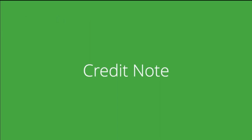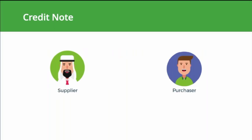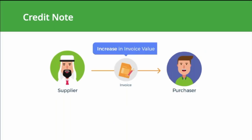Credit note. According to the FTA, a credit note is a written or electronic document in which any change made to a taxable supply that reduces it or cancels it is recorded. Simply put, when the cost of goods or services or the tax amount furnished in the invoice is higher than the actual chargeable rate, the supplier will issue a credit note to the recipient, crediting the corresponding amount to the client's account.